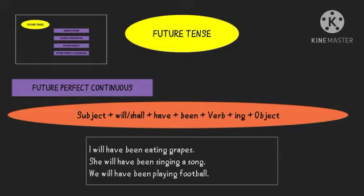So these are the tenses, their categories, and their formulas. What you have to do is just understand the formula and then insert words into it — that is the only thing you need to do. Identify your subject, put it there, then will or shall, then have, then been, then the verb with 'ing', then add the object, and you get a sentence.